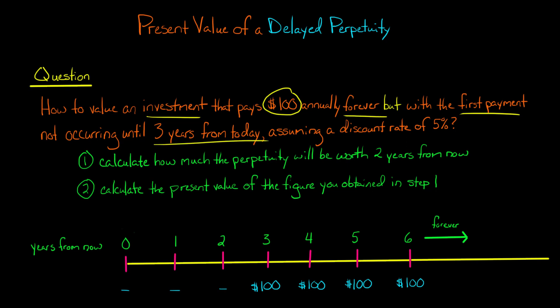The way you'd go about valuing this is you first calculate how much that perpetual stream of cash flows will be worth two years from now. Here's our stream of cash flows. The first $100 cash flow starts three years from today, and we're going to calculate the present value of that stream of cash flows as of two years from now.